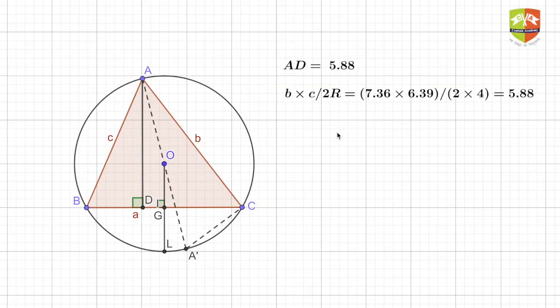Hello friends, welcome again to another session on Gems of Geometry. Continuing with our trend, we are going to discuss another very important result here. The result is that if you have a triangle ABC and AD is one of the altitudes, then the length AD will be equal to b times c divided by 2R, where R is the circumradius of the triangle ABC.